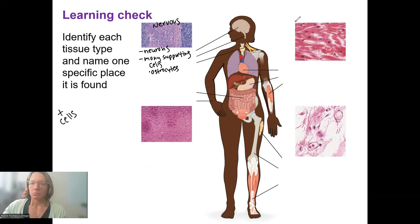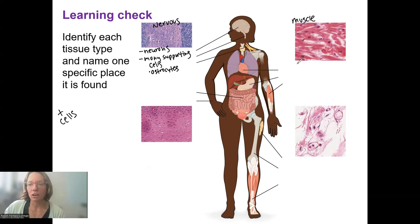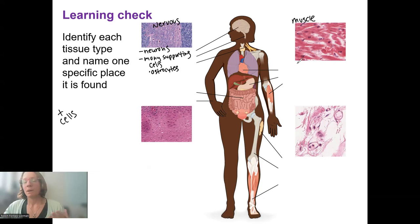Over here we have muscle. This will be present around the skeletal muscles, in the heart, and around visceral organs and digestive organs, depending on what type of muscle it was.